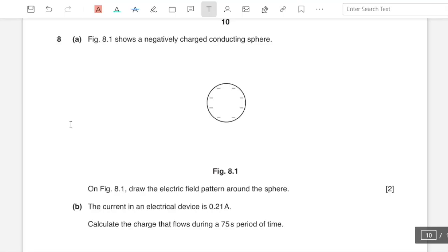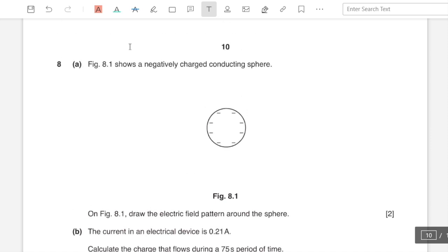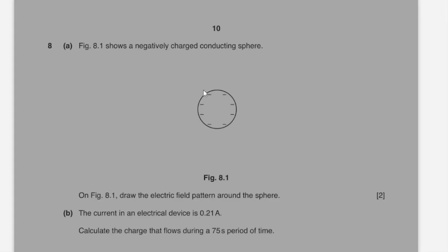Question number eight part a: figure 8.1 shows a negatively charged conducting sphere. Draw the electrical field pattern around this sphere. The electrical field pattern shows the direction of forces acting on any positive charges around the sphere, and that would be towards this sphere because positive and negative are opposite charges which attract.